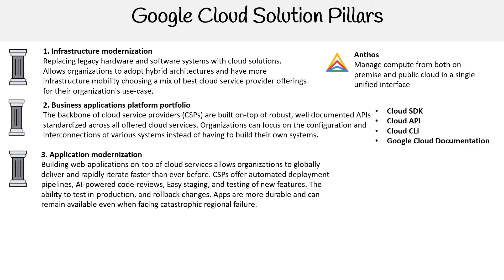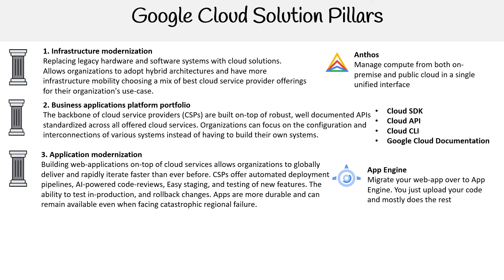For number three, we have application modernization. Building web applications on top of cloud services allows organizations to globally deliver and rapidly iterate faster than ever before. CSPs offer automated deployment pipelines, AI-powered code reviews, easy staging and testing of new features, the ability to test in production, rollback changes, and apps are more durable and can remain available when facing catastrophic regional failure. One thing that makes it really easy to build very robust web apps is migrating your web app over to App Engine, because it takes care of a lot of the stuff for you — you upload your code, do some configuration, and it makes things highly durable, available, and scalable.